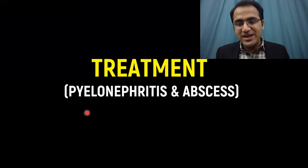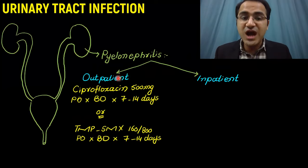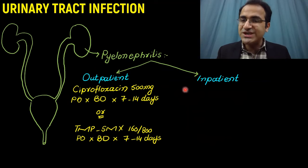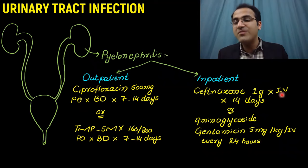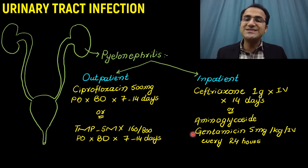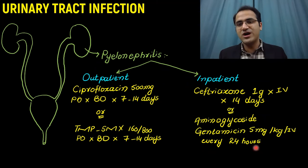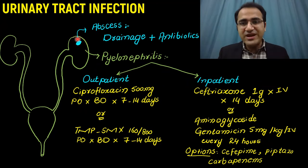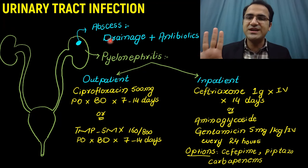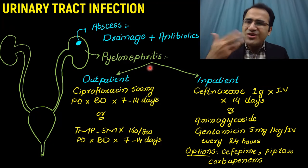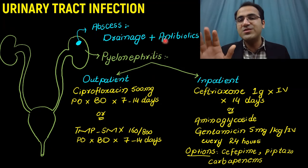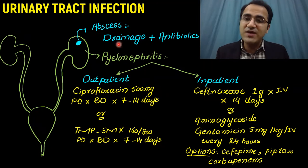For pyelonephritis treated outpatient, give ciprofloxacin 500 mg per oral twice daily for 7–14 days, or trimethoprim-sulfamethoxazole per oral twice daily for 7–14 days. For inpatient treatment, give ceftriaxone 1 g IV for 14 days, or an aminoglycoside like gentamicin 5 mg/kg IV every 24 hours. Other options include cefepime, piperacillin-tazobactam, or carbapenem. For perinephric abscess, drainage is required in addition to antibiotics — patients with persistent fever despite antibiotics should be suspected of abscess.